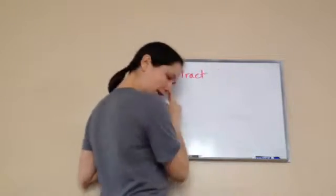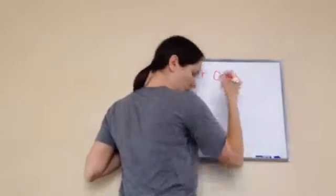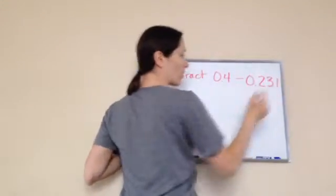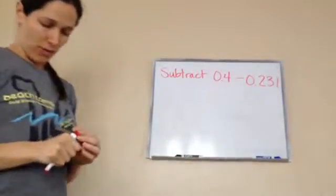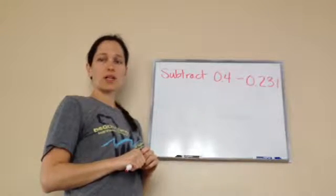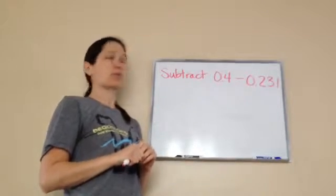Subtract - I'm going to write this down on your paper: 0.4 minus 0.231. Okay, now remember when we talked about this, what's the most important rule to remember when you are subtracting or adding decimal numbers?